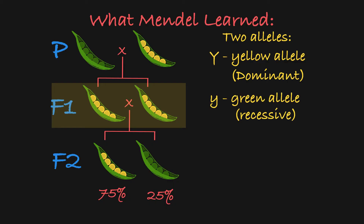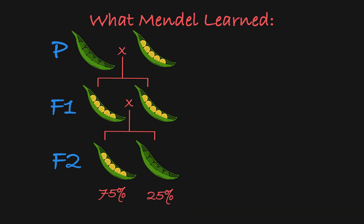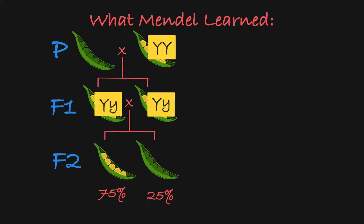and a recessive allele that encodes green peas. When a plant contains at least one yellow allele, the plant will make yellow peas. And when a plant has two copies of the recessive green allele, then it will have green peas. So these F1 plants are all hybrids, having received a yellow allele from one parent and a green allele from the other parent.